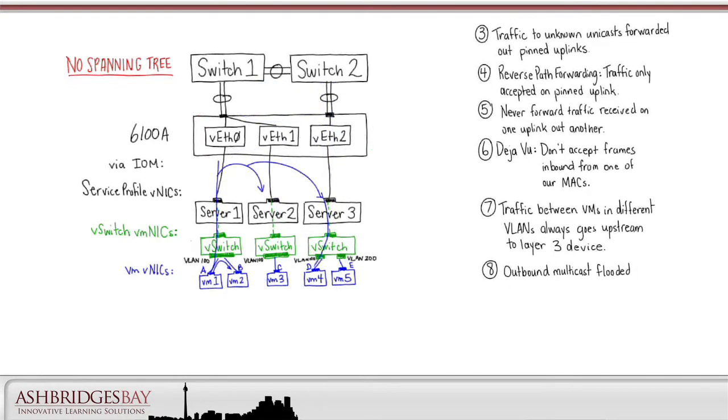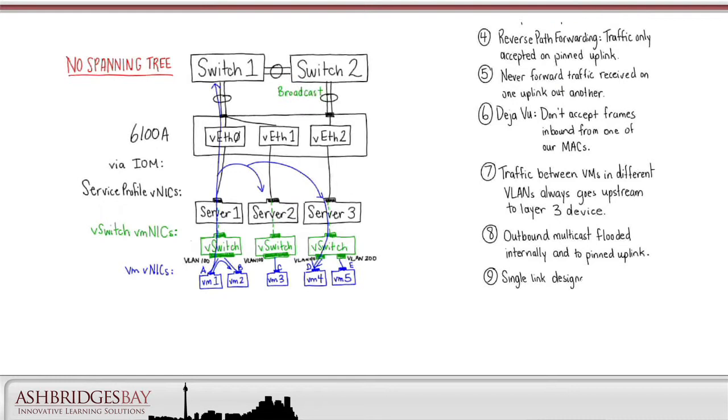Traffic between VMs in different VLANs always goes upstream to a Layer 3 device. Outbound multicasts are flooded internally into the pinned uplink. A single link is designated as the Broadcast Listener. Broadcast traffic is only accepted on that link. All of these things together allow us to connect to the upstream switches in end host mode just like we were a big ESXi server. We can run without the spanning tree and have all of our links active.